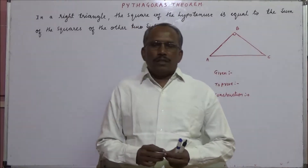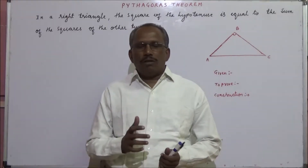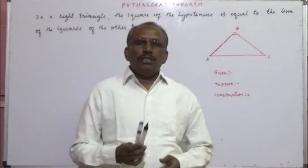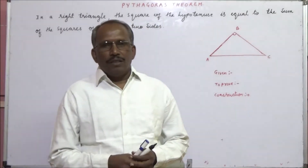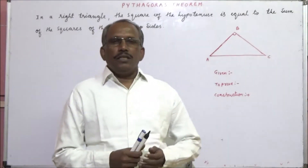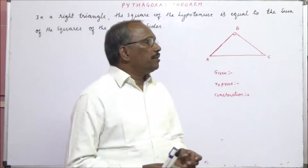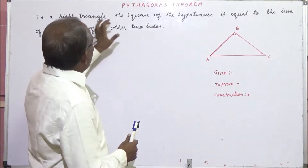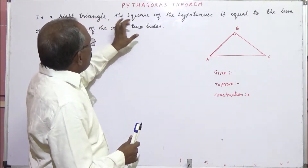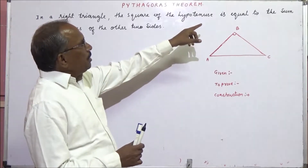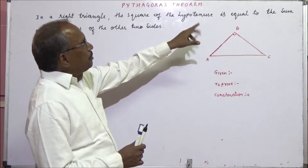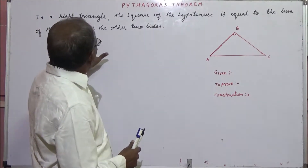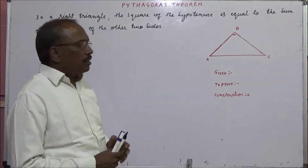Okay students, let us see one of the important theorems, that is Pythagoras theorem. So let us see its statement: in a right triangle, the square of the hypotenuse is equal to the sum of the squares of the other two sides.